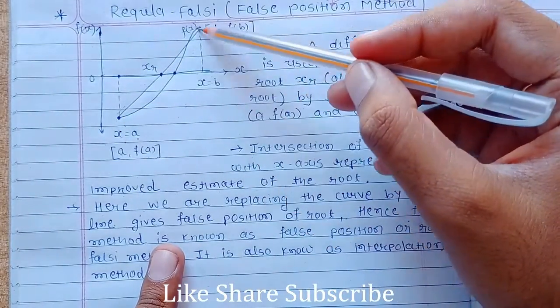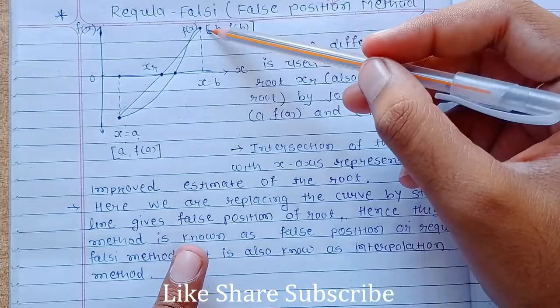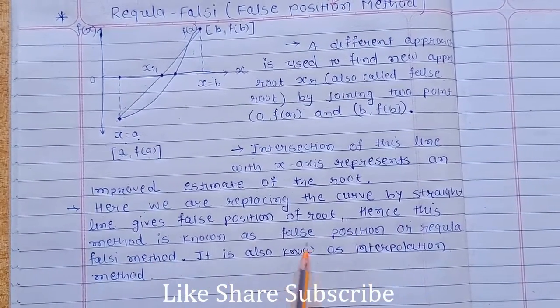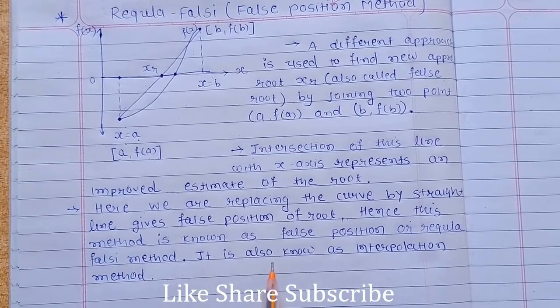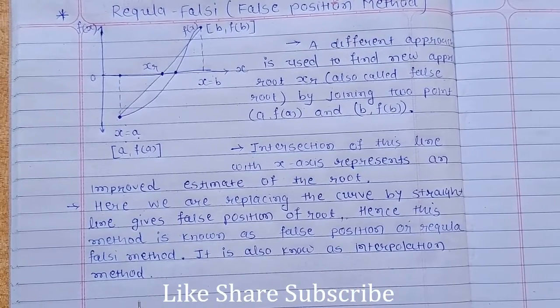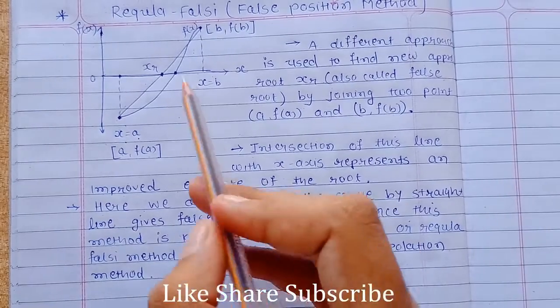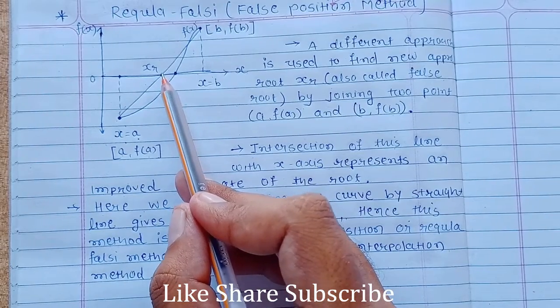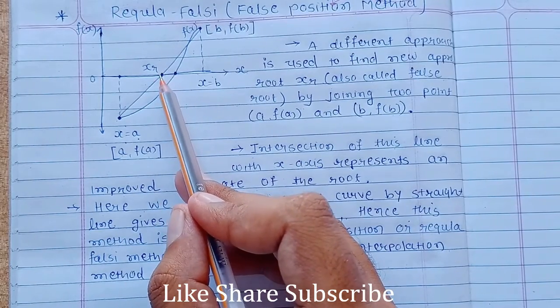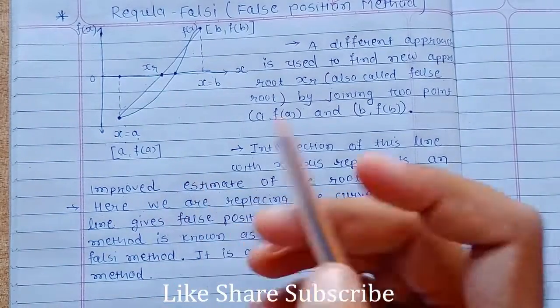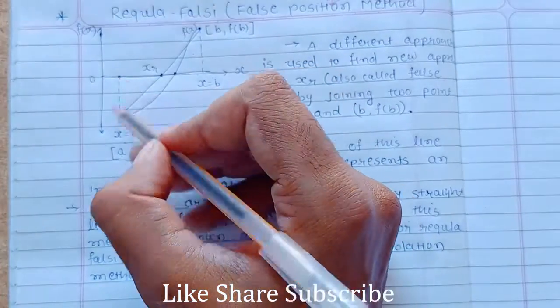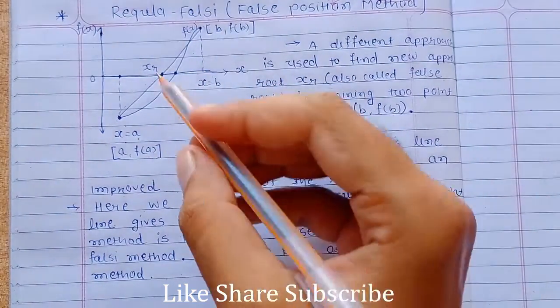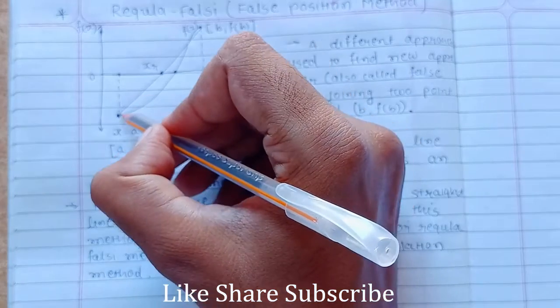By replacing this curve with a straight line gives a false position of root. Hence this method is known as false position or regula falsi method. It is also known as interpolation method. Now we will derive how to find this value xr or false root xr or new approximated root xr. So using these similar triangles, this triangle and this triangle, or even we can take the slope of this line.